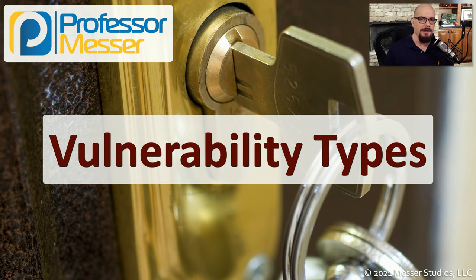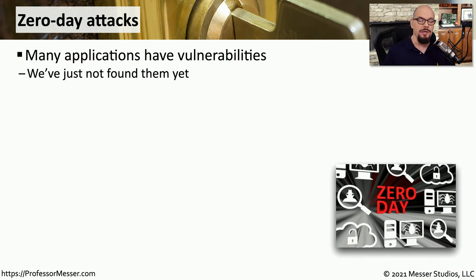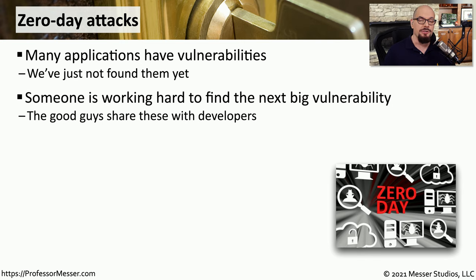There are many ways for attackers to find their way inside of your network, and in this video we'll look at some of these common vulnerability types. The applications we use on our computers and workstations every day have vulnerabilities inside of them. We just haven't found those vulnerabilities yet. But hidden somewhere within the code of these applications is potentially a way that an attacker can use to get into your network. Security researchers are interested in closing these holes before the attackers find them, and they're doing research every day to try to identify these vulnerabilities that may be hidden in our software.